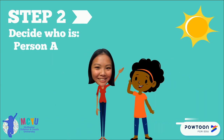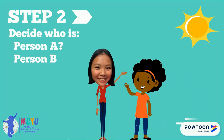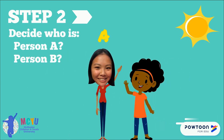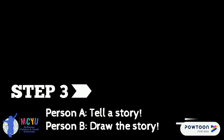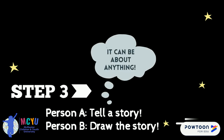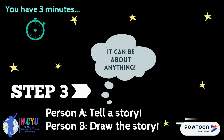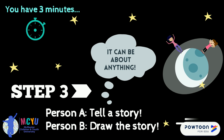Step 2: once you get a partner, you will have to decide which one of you will be person A and person B. Step 3: now that you have assigned roles, person A will start by telling a story. It can be made up from your imagination or something that you have experienced. Pause this video and for the next three minutes, as person A is telling their story, person B should be drawing the story from start to finish.